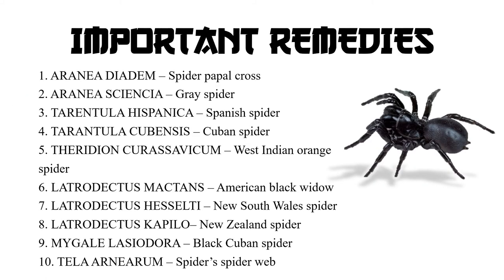When we talk about important remedies of the spider group, here we have a list of medicines you have often heard of — Arachnids, Tiridion, Talentula, Aranida — along with a few other names in this group.